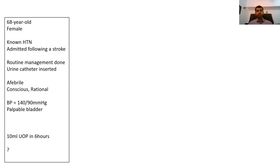Before moving on to the presentation, here are a few case scenarios. The first: a 68-year-old female, known hypertensive, admitted following a stroke. Routine management is done, a catheter is inserted. On examination she is afebrile, conscious, rational, blood pressure relatively stable at 140/90. However, there is a palpable bladder, and the monitoring chart shows urine output of only 10 millilitres over the last six hours — considered oliguria.